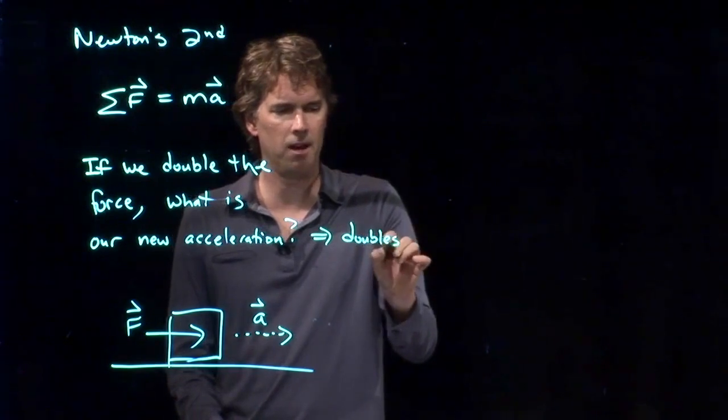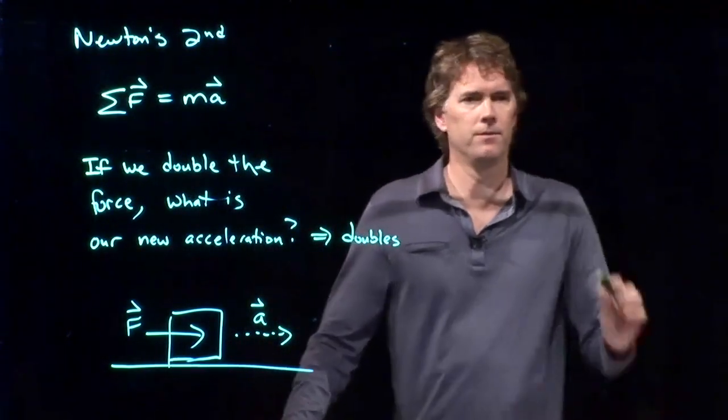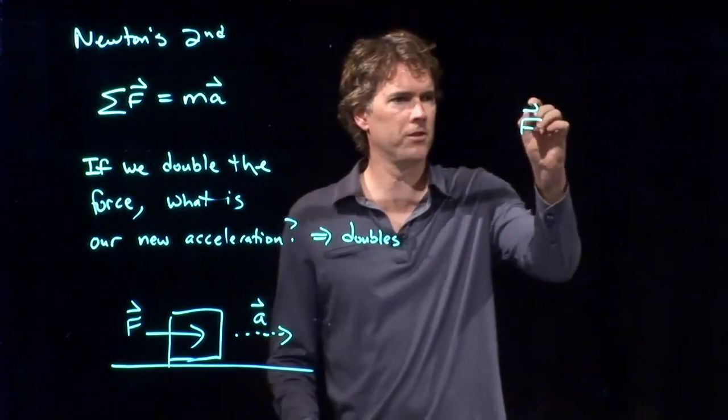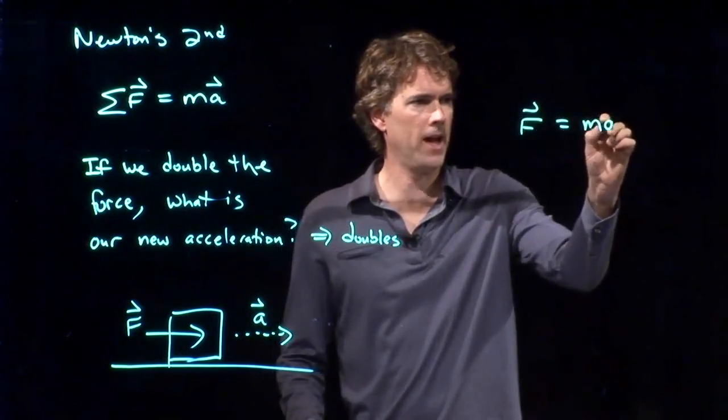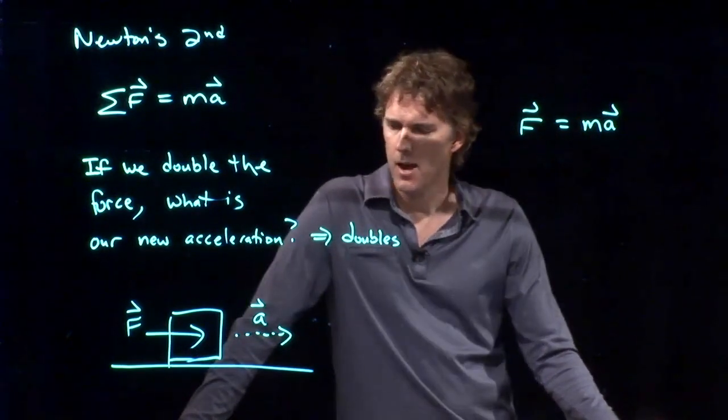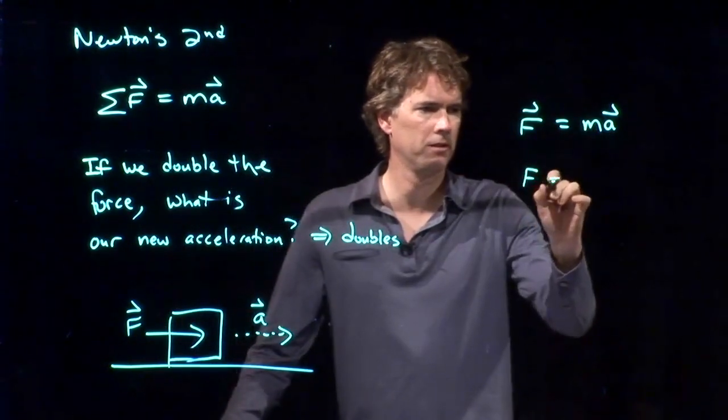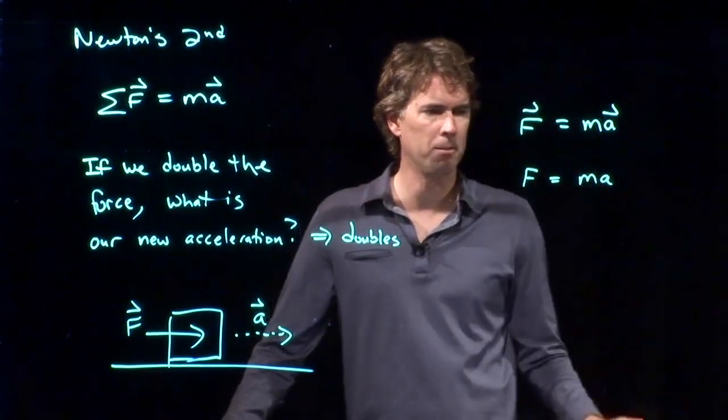How do we see that mathematically? Well, we just have one force, so our summation just becomes that: F equals ma. And we're only worried about one dimension here, so let's just forget the vector signs for a second. F equals ma.